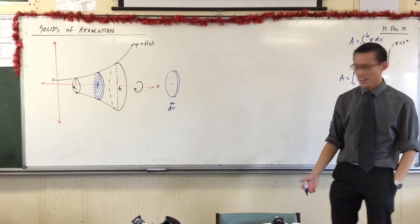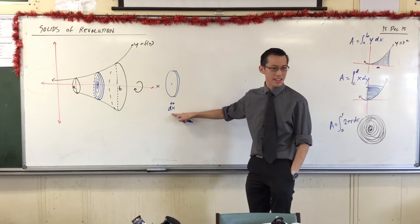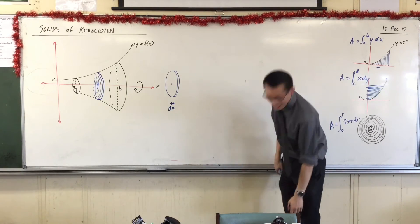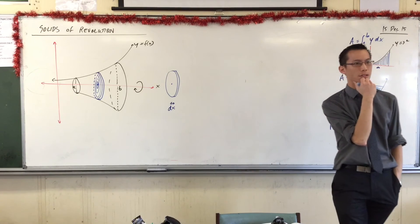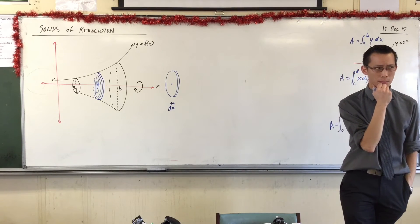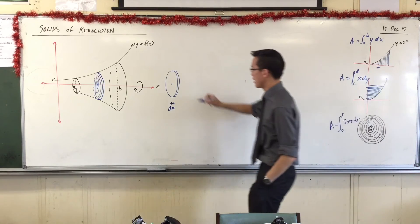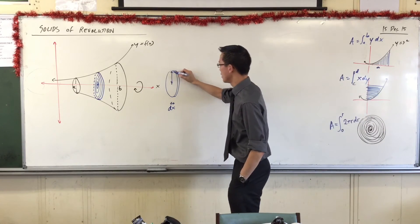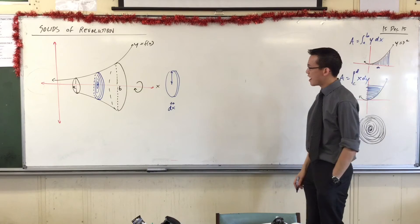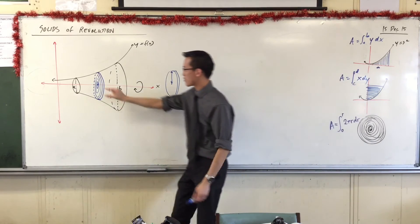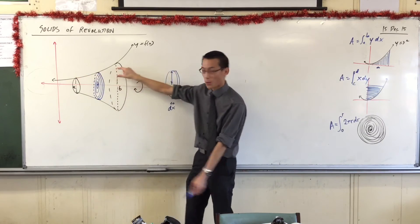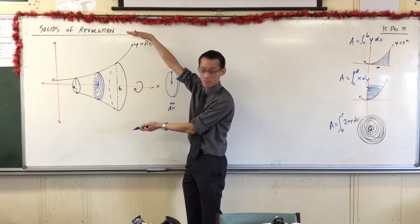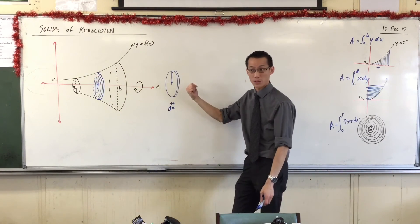It's a cylinder, so this width here is kind of like the height of the cylinder. You're kind of looking at it sideways. What other dimension do I need to know the volume of this cylinder? I need its radius, don't I? That radius is this height here. Now that height here is whatever this y value is, do you see that? Like that tells you how tall, how wide this cylindrical disc is going to get.